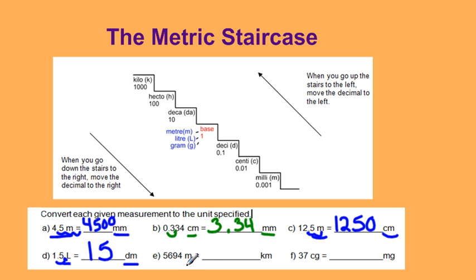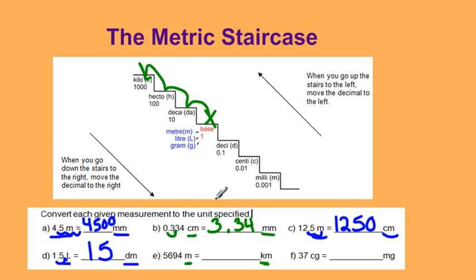Now I'm going from meters to kilometers. Meters is my base, and kilometers is three stairs to the left, which means I'm moving the decimal three spots to the left, which is going to leave me with 5.694 kilometers.